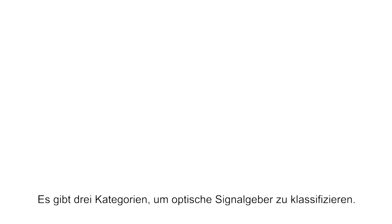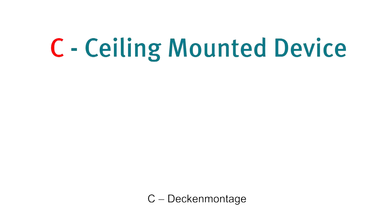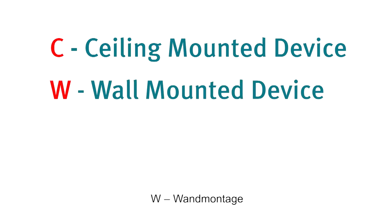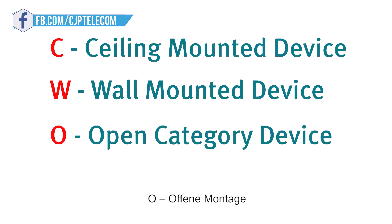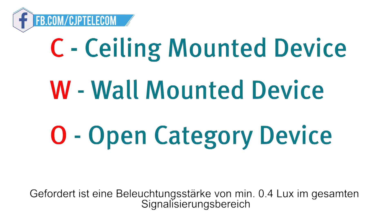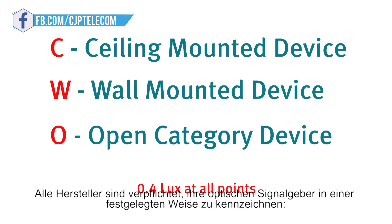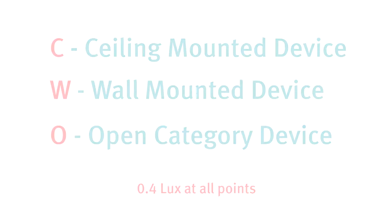There are now three categories that a VAD can be rated under: C for ceiling mounted device, W for wall mounted device, and O for open category device. The specified output for a VAD is now required to be 0.4 lux at all points within the specified coverage volume, and all manufacturers are now required to label their VADs in a specific way.